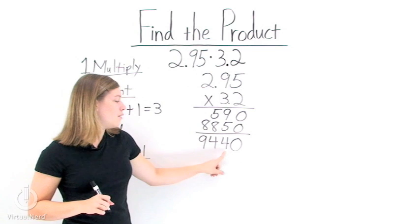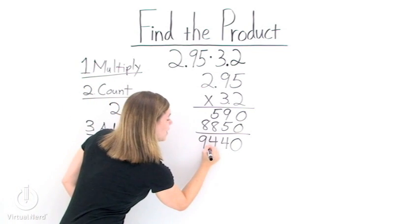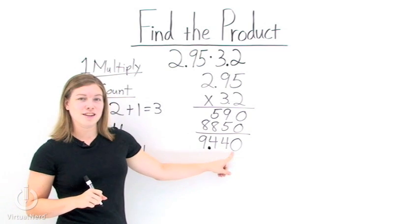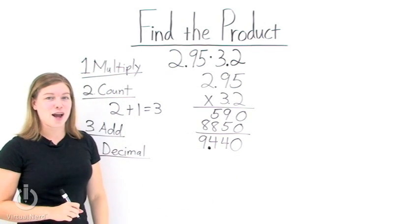So we go 1, 2, 3. Put your decimal point right there. This gives us 3 decimals after our answer and an answer of 9.44.